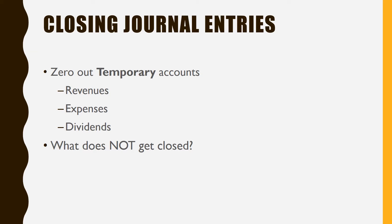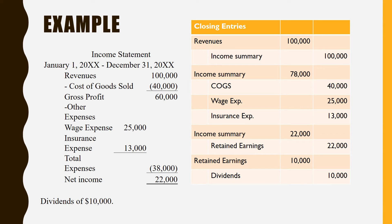All closing entries do is zero out your temporary accounts — those are your income statement accounts and dividends. We close those out and in essence move the values to retained earnings. What does not get closed are the balance sheet accounts, because the balance sheet is a snapshot at one point in time whereas the income statement is for a period of time. We need to start the year at zero for income, whereas your cash account, for example, just accumulates from the beginning of time to figure out how much you have at any point.